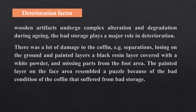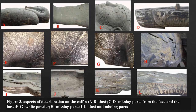Deterioration Factors. Wooden artifacts undergo complex alteration and degradation during aging. Bad storage became a major factor in deterioration. There was a lot of damage due to coffin separation, loss of the ground layer and the painted layer. A black resin layer was covered with white powder and had missing parts from the foot area. The painted layer on the face area resembled a puzzle because of bad storage and previous conservation. Figure 3 shows aspects of deterioration including dust, missing parts of the face and base, white powder on the black resin, and missing parts from the coffin.